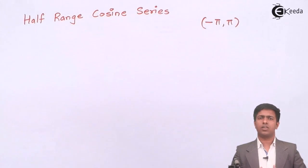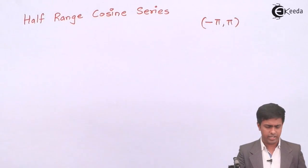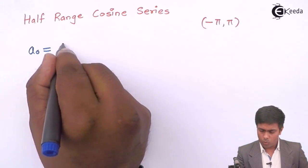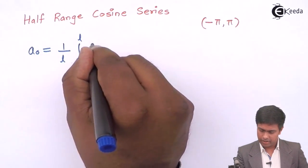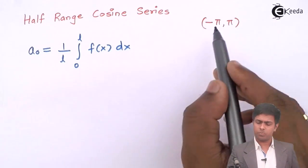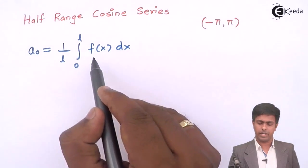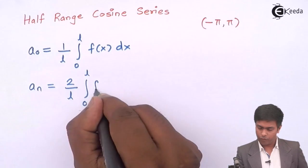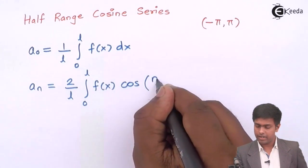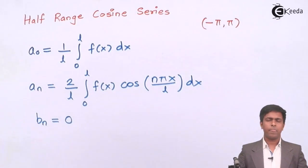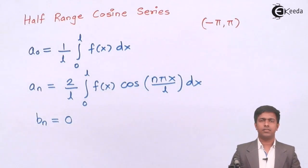For half range sine and cosine series, let's go back to the even and odd function formulas. In the case of an even function over the range −l to l, the value of a₀ is given by (1/l) ∫₀ˡ f(x) dx. For the range −π to π, it is (1/π) ∫₀^π f(x) dx. Similarly, aₙ is given as (2/l) ∫₀ˡ f(x) cos(nπx/l) dx, and the value of bₙ is 0. These are the three formulae for an even function f(x) over the range −l to l.